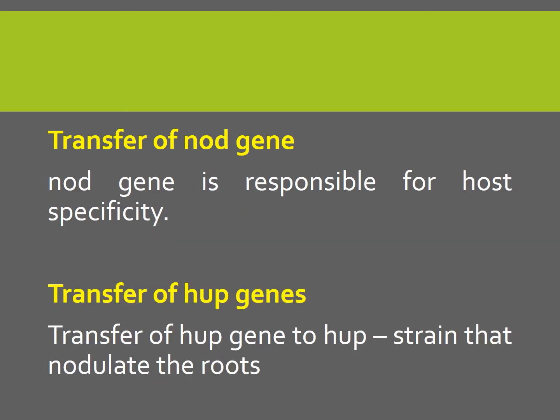The fourth aspect is transfer of NOD genes. NOD genes not only help in nodulation or formation of nodules, they are also responsible for host specificity. For example, Rhizobium phaseoli will form nodules only in beans. But if the NOD gene of Rhizobium leguminosarum is transferred to Rhizobium phaseoli, then phaseoli can nodulate not only beans but also pea plants. So the same organism can be used to cause nodulation and nitrogen fixation in several different plants — we do not have to use the specific species of Rhizobium itself.